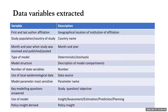The data variables we extracted included: authorship — first and last authorship in view of their institutional affiliation and geographical location; the study population or country of study; the month and year when the study was received or published; the type of model, whether deterministic or stochastic; the model structure, looking at the different compartments used; the number of state variables; use of local epidemiological data to calibrate the models; the parameters that were most sensitive; the key modeling questions addressed; the use of models, whether for insight, assessment, estimation, prediction, or planning; and the policy insights derived from the modeling work.